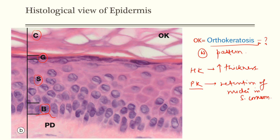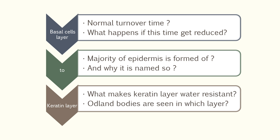The basal cell layer rests on a basement membrane — I am drawing it here. You can see the indentations, and below it is the papillary dermis. Moving on, we have the transition of basal cell layer to keratin layer. So what's the normal turnover time? It is 50 to 60 days — that's how long it takes for a cell from the basal layer to become the keratin layer.